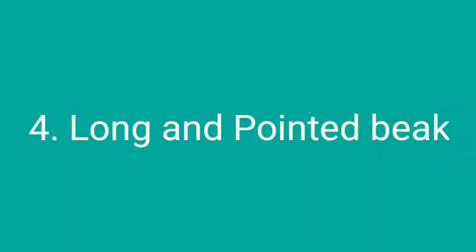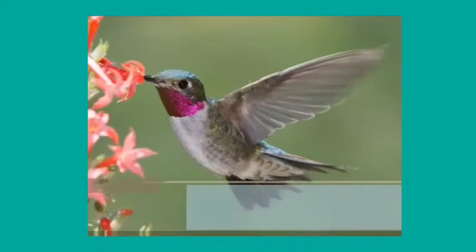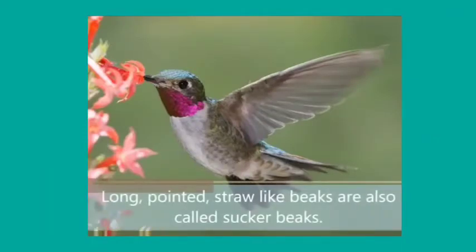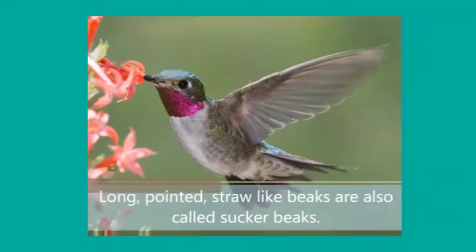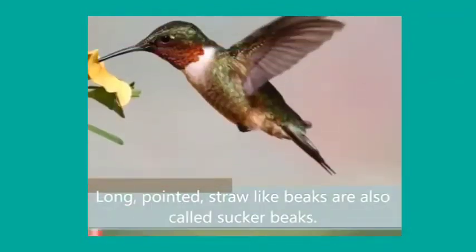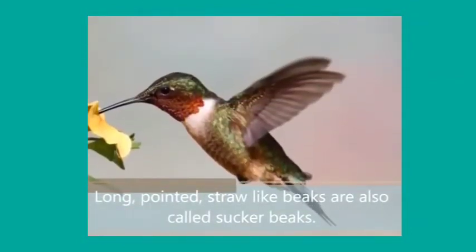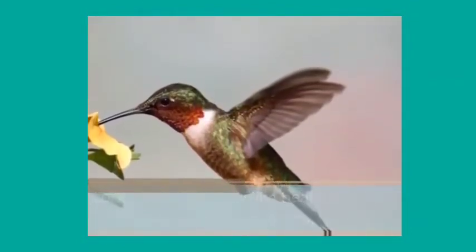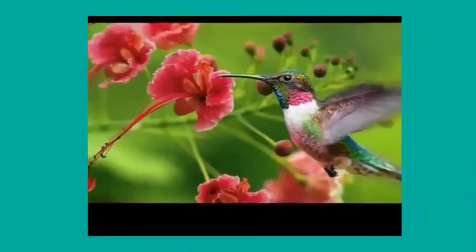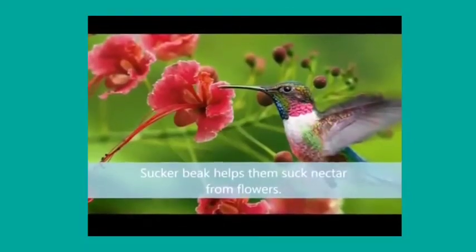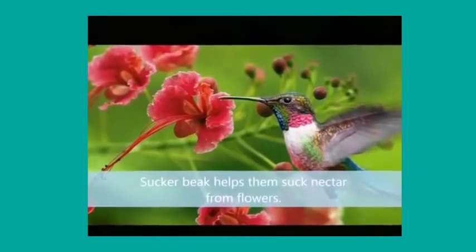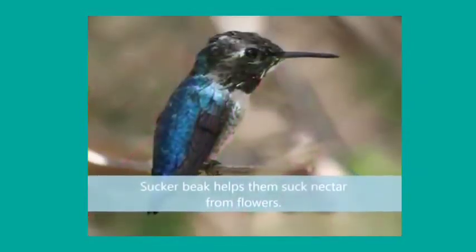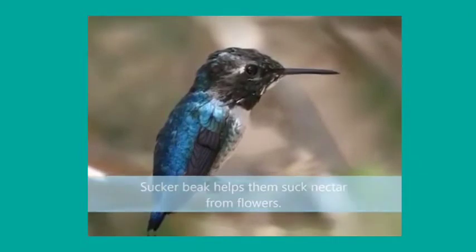The fourth type of beak is the long and pointed beak. Birds like the hummingbird have a long and pointed beak so that they can suck the nectar. Nectar means the sugar-rich liquid which is produced by the flower. They can suck the nectar from the flower with the help of their long and pointed beak.